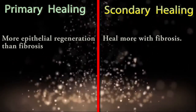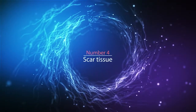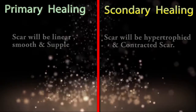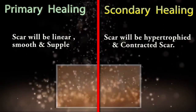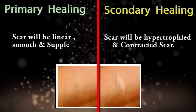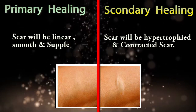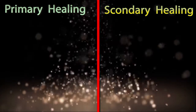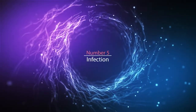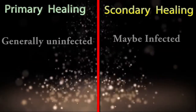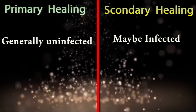healing occurs more with fibrosis. Difference number four is scar tissue: the scar tissue which forms in primary healing will be linear, smooth, and supple, but in secondary healing the scar will be hypertrophied and contracted.